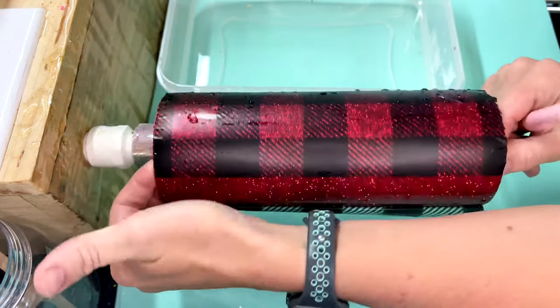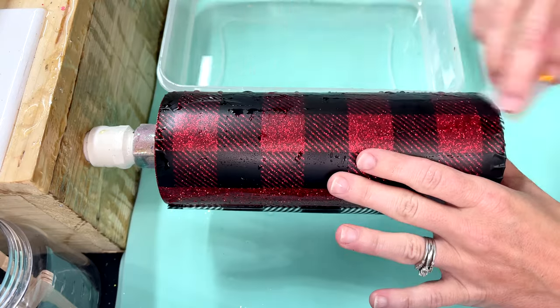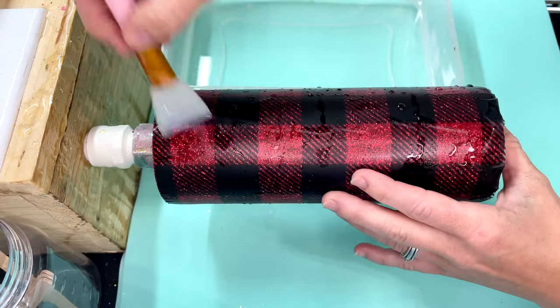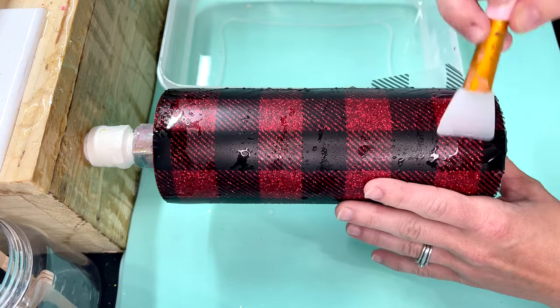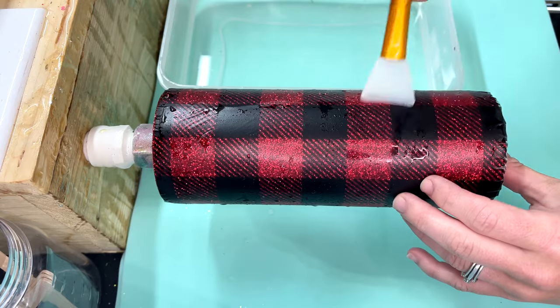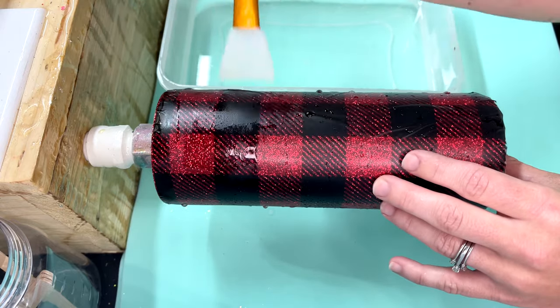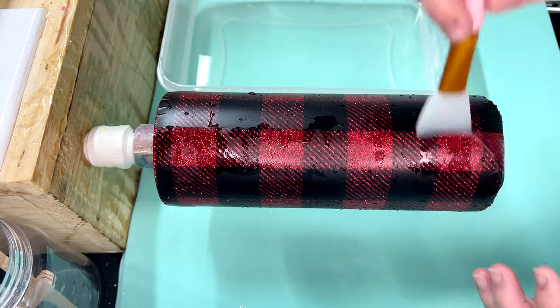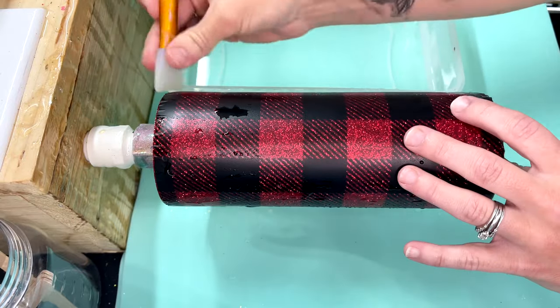Once you have that piece stuck down really well, you're just going to go around the entire tumbler doing the exact same thing and squeegee out any water that may be underneath. If you get any bubbles, sometimes that does happen, that is totally fine—just leave them instead of trying to really push on them to get that water to move. You can take a craft knife and just pop right in the center of them and take some tissue paper and apply some pressure, and it will release whatever water is underneath. Then you can just squeegee it down so it will be flat to the surface and you will never even be able to tell that it was there.